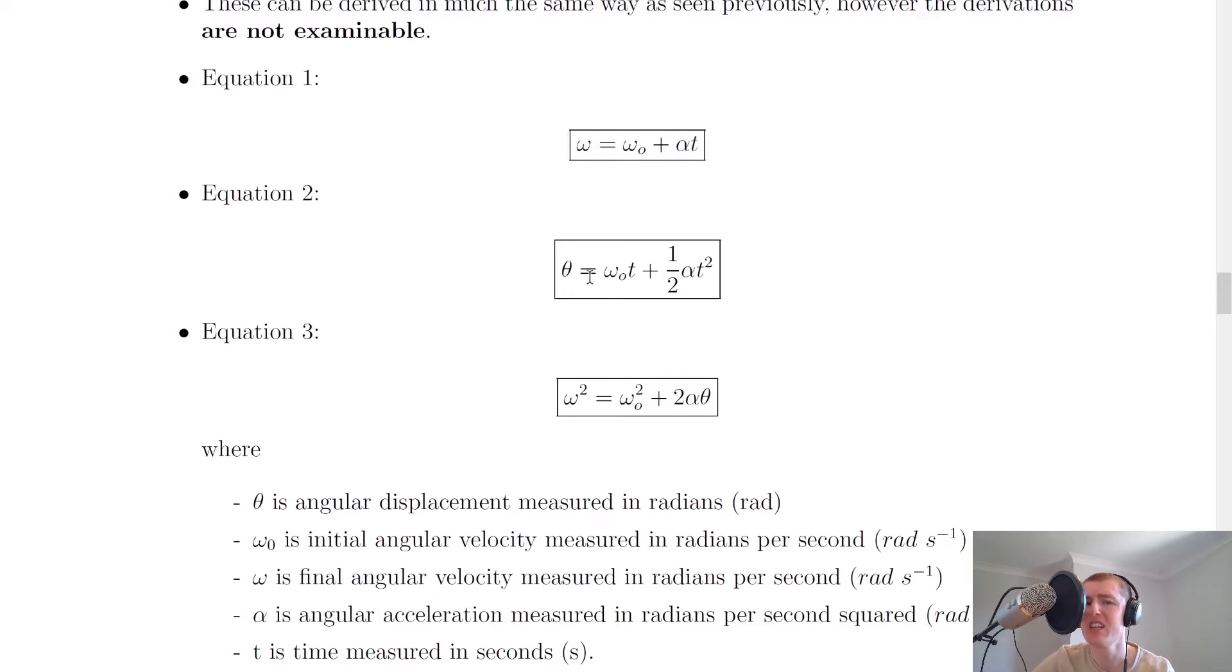Equation two is theta equals omega naught t plus a half alpha t squared, which says that the angular displacement is equal to the initial angular velocity times the time plus a half times the angular acceleration times the time squared.